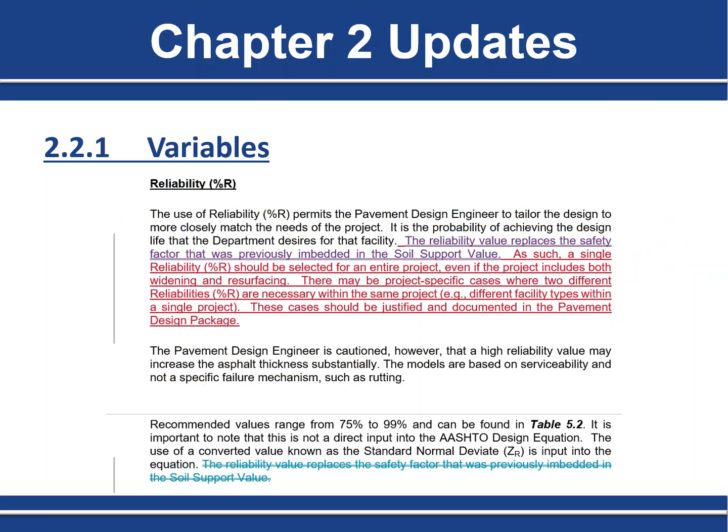Having said that, there are certainly project-specific cases where it makes engineering sense to use two different reliability values in the same project. An example would be a limited access road with ramps to an intersecting arterial road, where it would make sense to use one reliability for the limited access road and another for the arterial. As always, use good engineering judgment and document those decisions within your pavement design package.